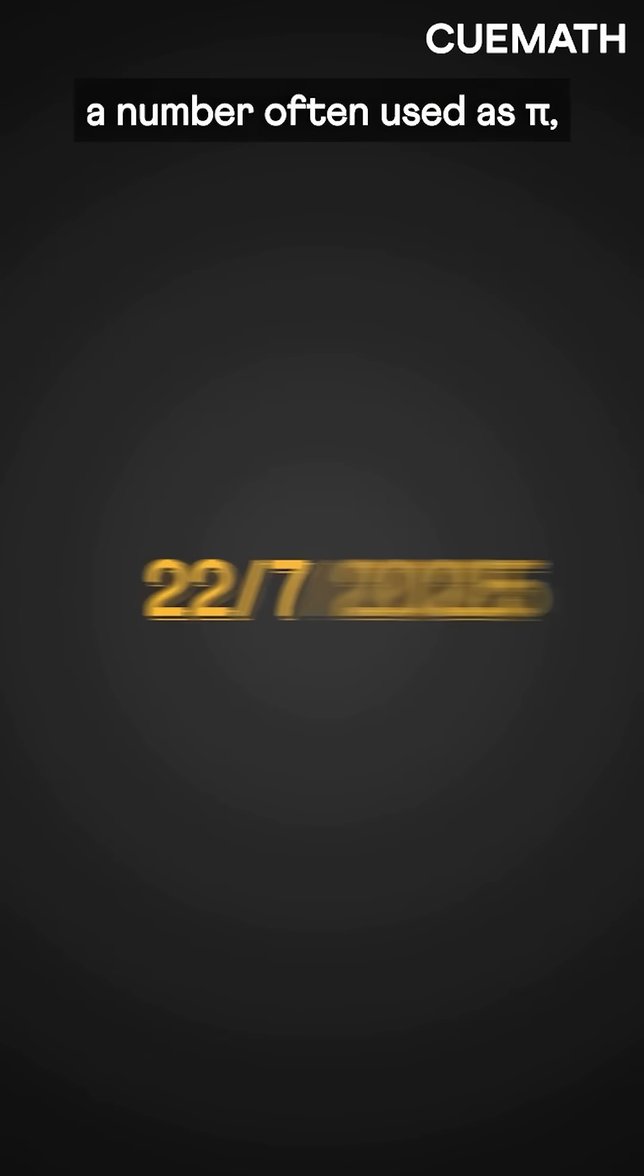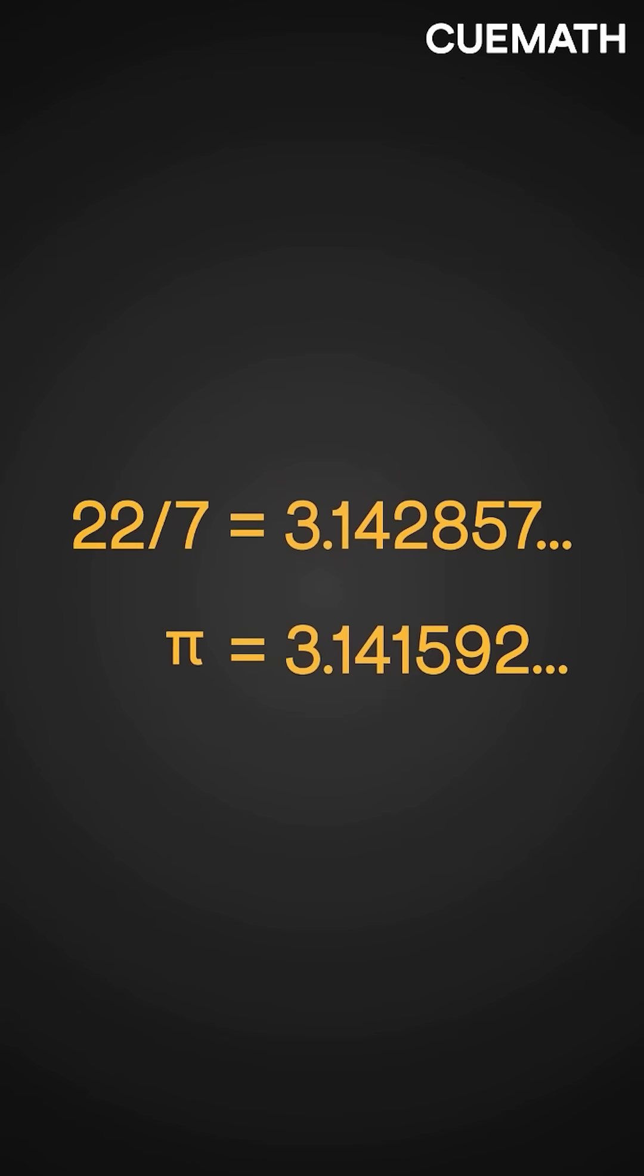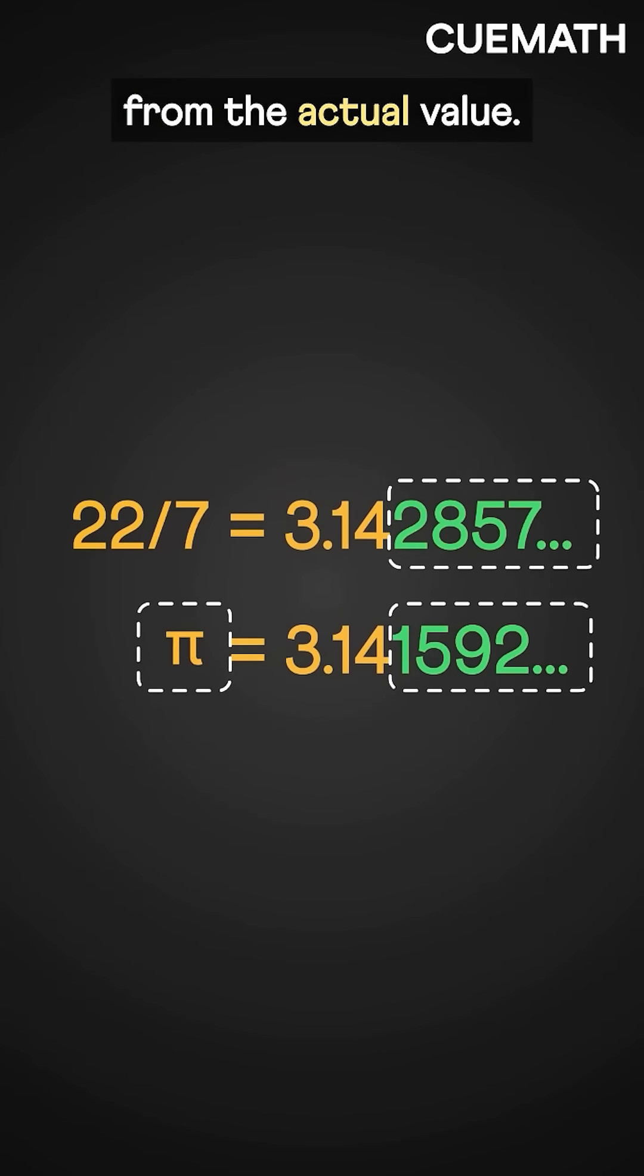Today is July 22nd, a number often used as pi, but it's just an approximation. There's a small difference from the actual value.